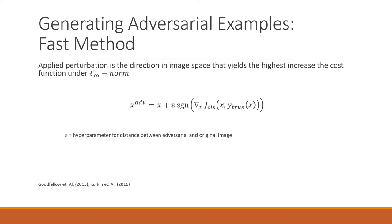The fast method for generating adversarial examples, first described by Goodfellow et al. in 2015, applies perturbations in the direction of the image space which yields the highest increase of linearized cost under the L-infinity norm. This is achieved by performing one step in the direction of the gradient sign with step size epsilon. The formula is: x_adversarial equals x plus epsilon times the sign of the gradient with respect to x of the cost function of the classifier. This is called the fast method because it is non-iterative.